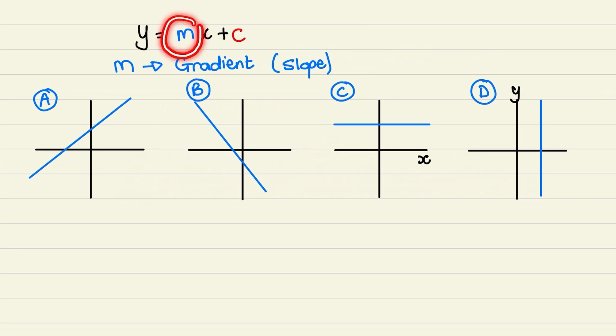Let's move on to m in our equation. m is also known as the gradient or the slope, and we are going to discuss four different types of gradients.